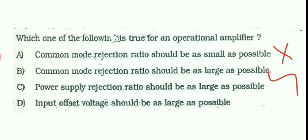Third option is: power supply rejection ratio should be as large as possible. No, PSRR should be very very less for op-amp. PSRR states how much of input offset voltage changes with respect to change in supply voltage or input voltage. So it should be very very less. And input offset voltage should be as large as possible. No.